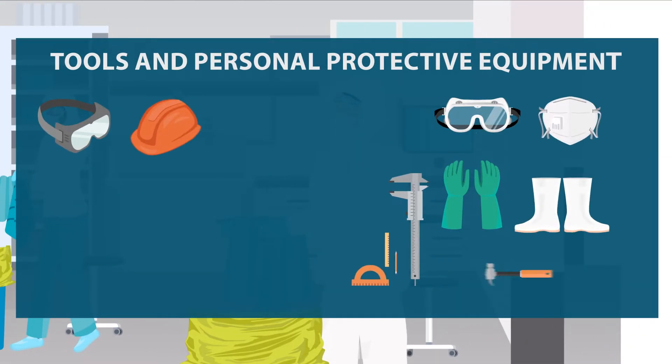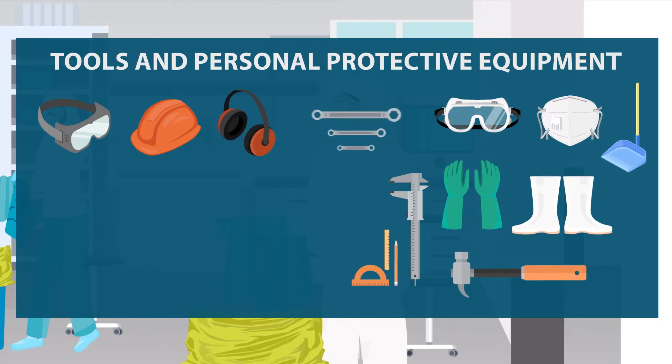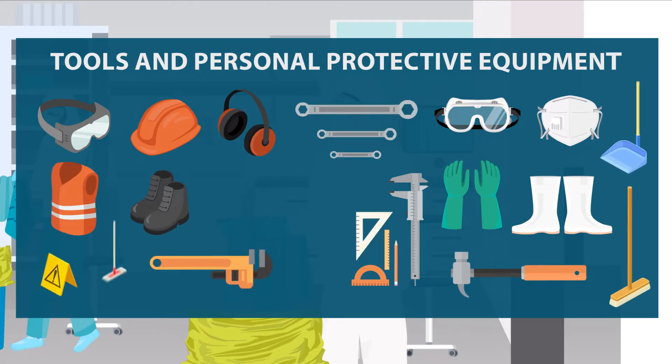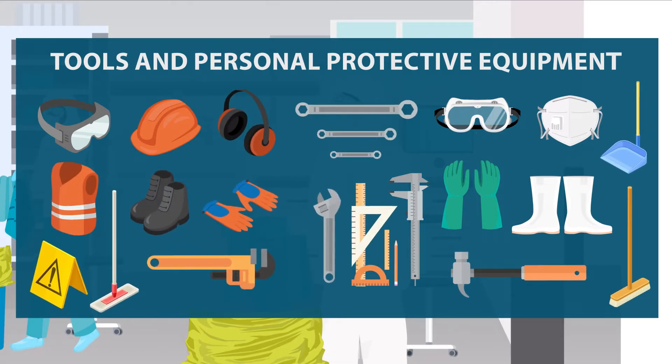Low level waste can come in various forms such as used equipment, paper, cable, clothing, decommissioned parts, and even mops.